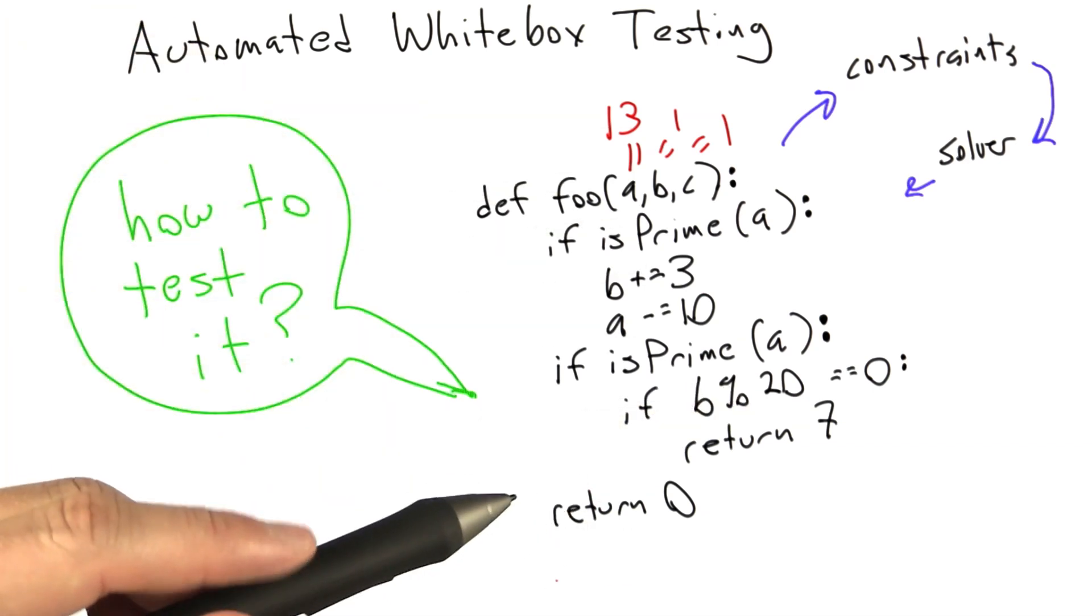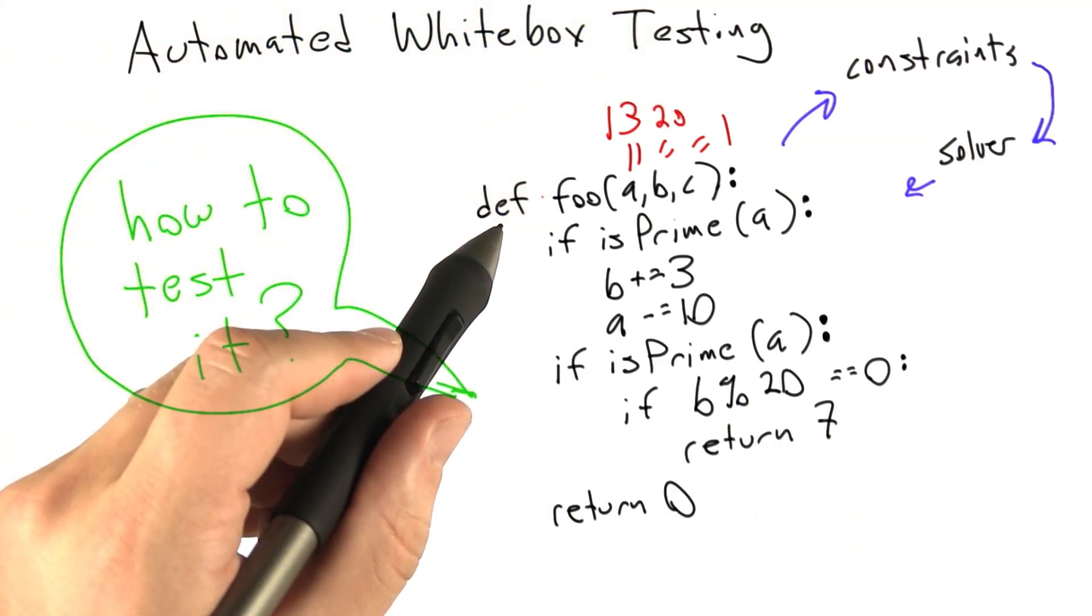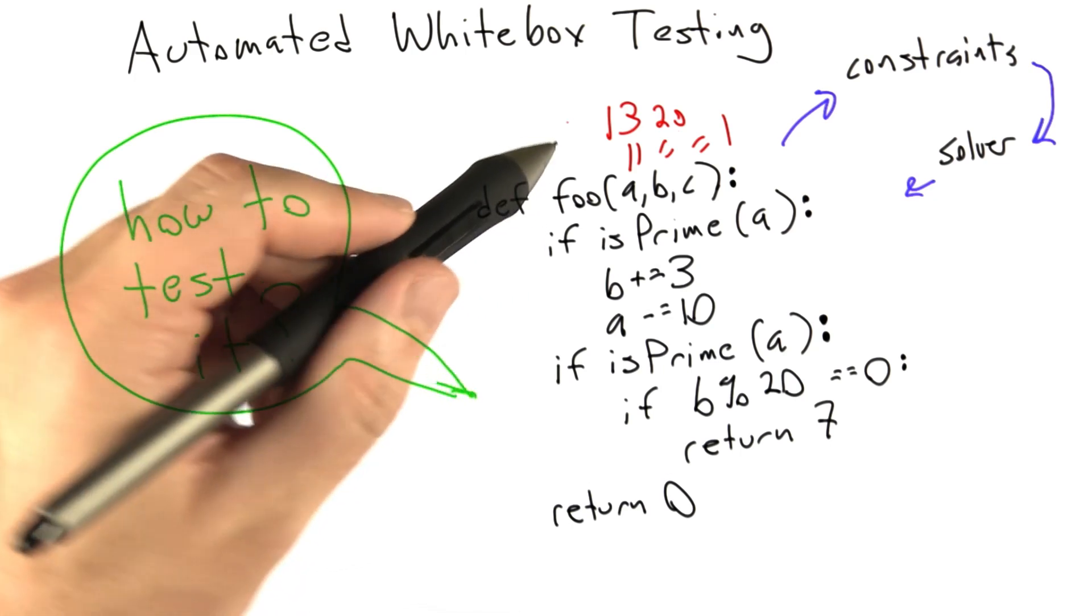The third time through the function, it's going to add a new constraint. Not only are we keeping all of our constraints on A, but we're adding a new constraint on B that B mod 20 has to come out to be 0. This time the solver comes up with A is 13 and B is 20, and it's going to execute the function another time.